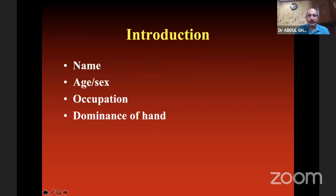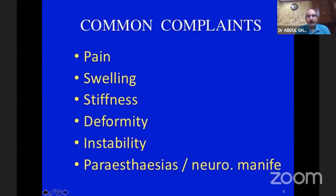When we talk of history, examination of the elbow is not before history. You have to take a quick history — name of the patient, address the patient by name, age, gender. Occupation and dominance of hand is particularly important in upper limb. Common chief complaints are pain, swelling, stiffness, deformity, instability of elbow, or neurological symptoms like paresthesia, numbness, and tingling.